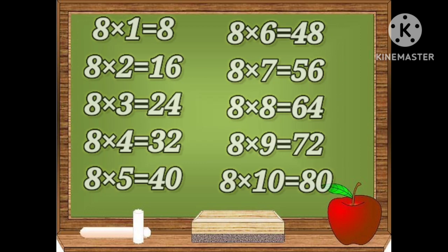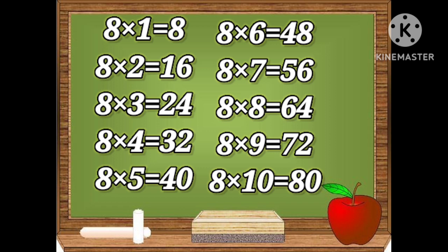Let's repeat the table. Eight ones are eight, eight twos are sixteen, eight threes are twenty-four, eight fours are thirty-two, eight fives are forty, eight sixes are forty-eight, eight sevens are fifty-six, eight eights are sixty-four, eight nines are seventy-two, eight tens are eighty.